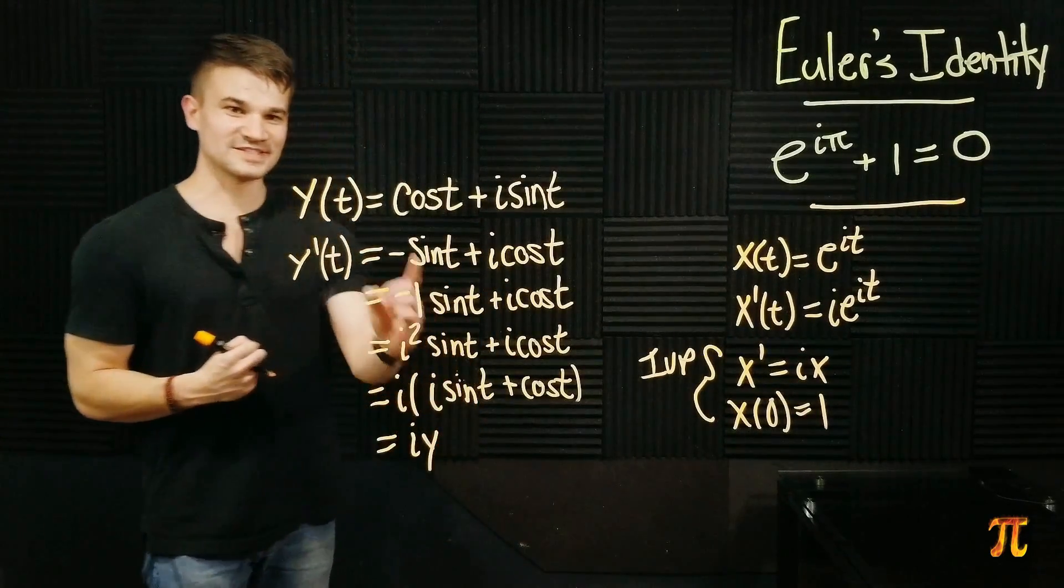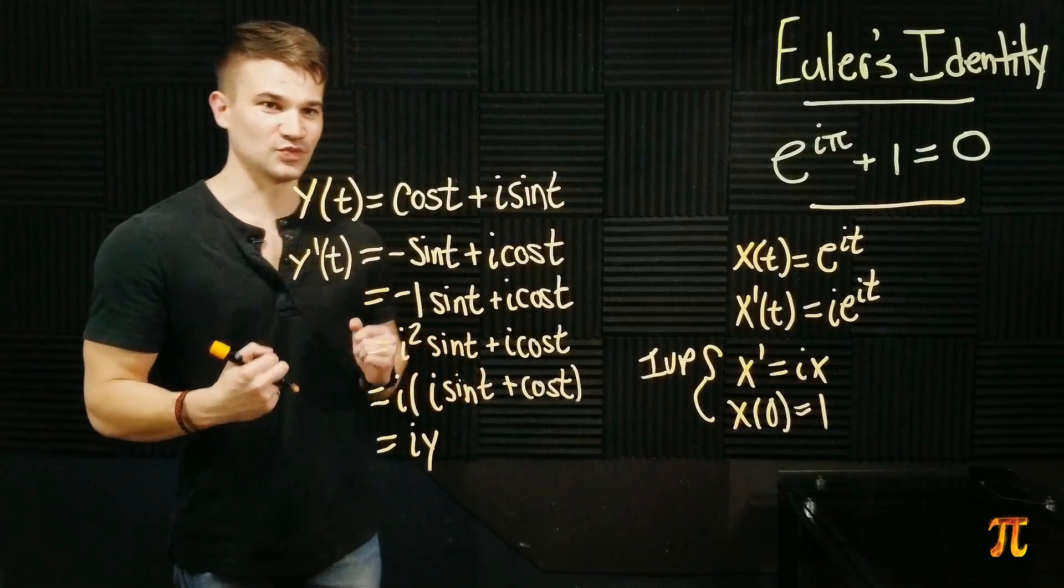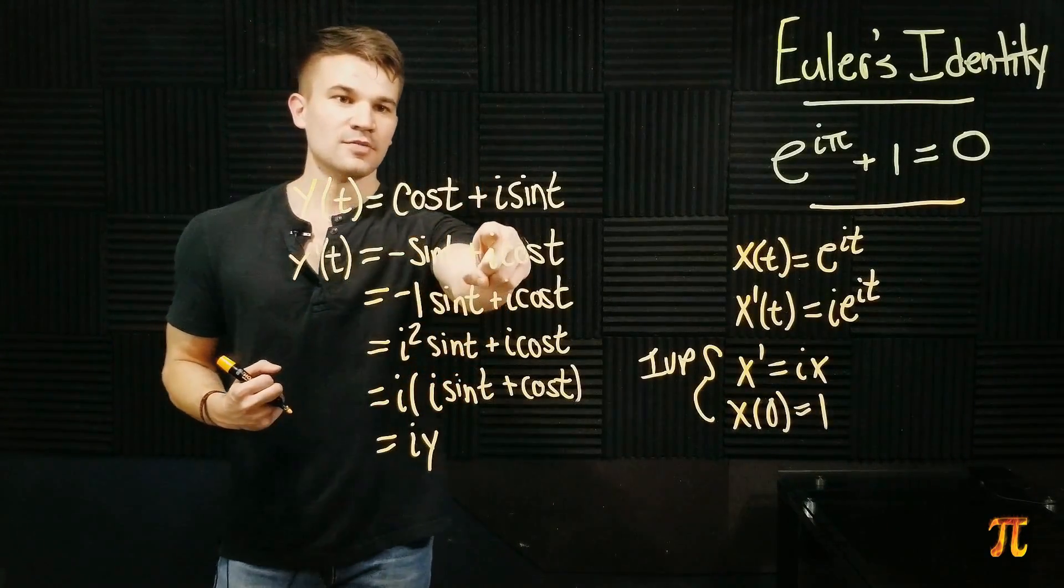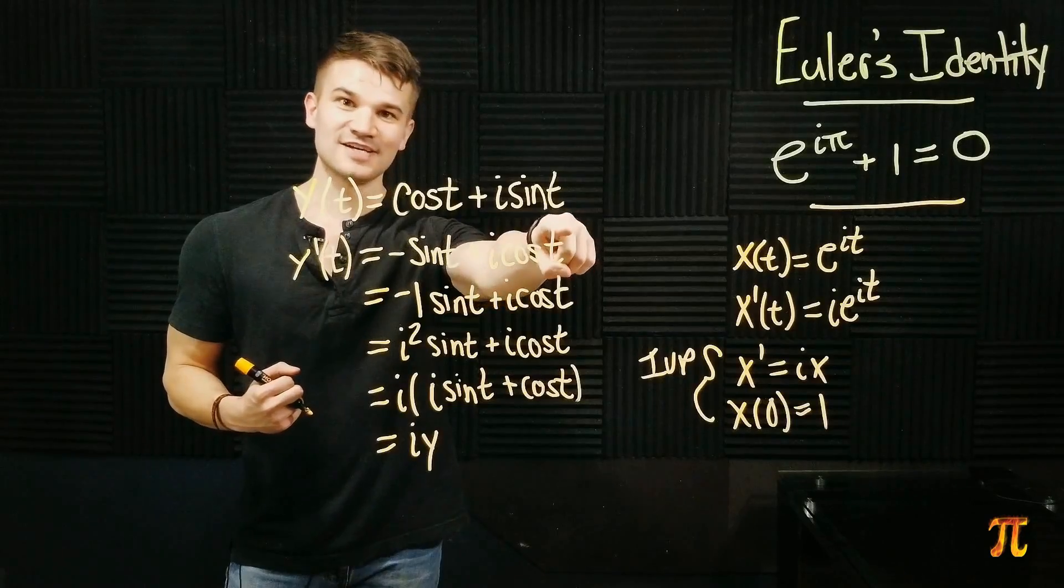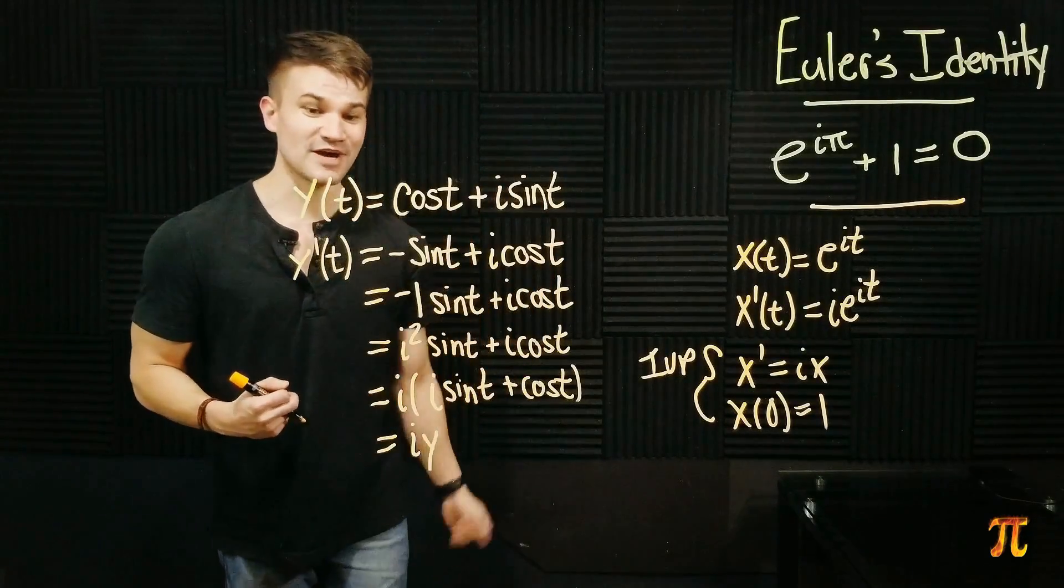Furthermore we can see that if you plug in zero to this function y we're gonna get cosine of zero which is 1 plus i sine zero which is zero. So the initial value holds as well.